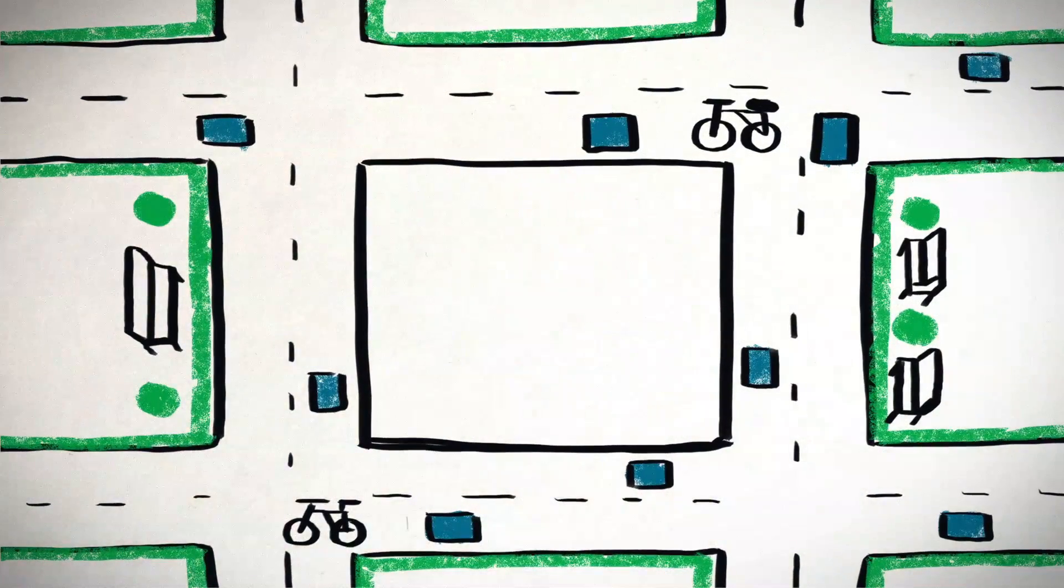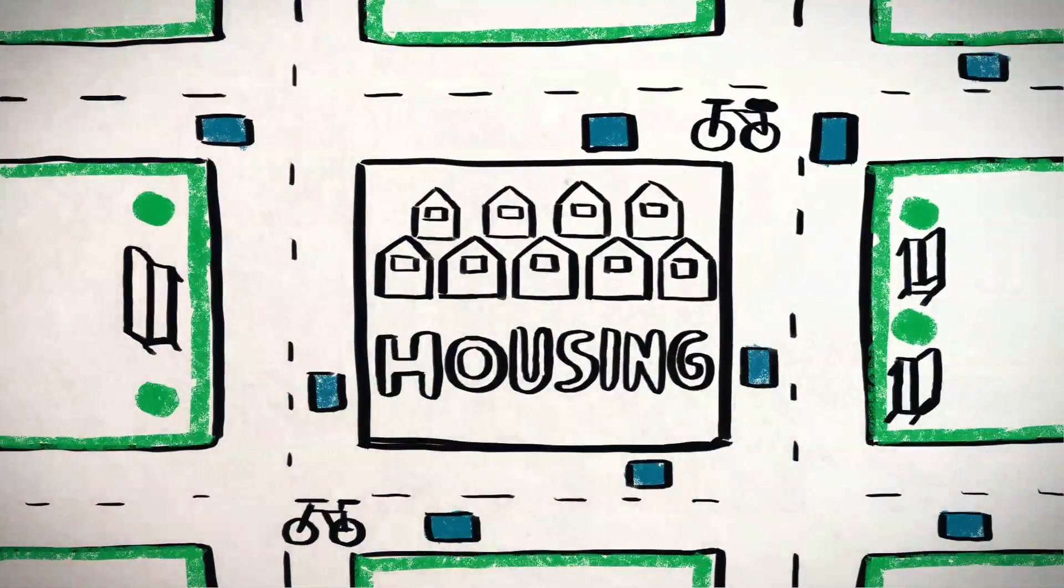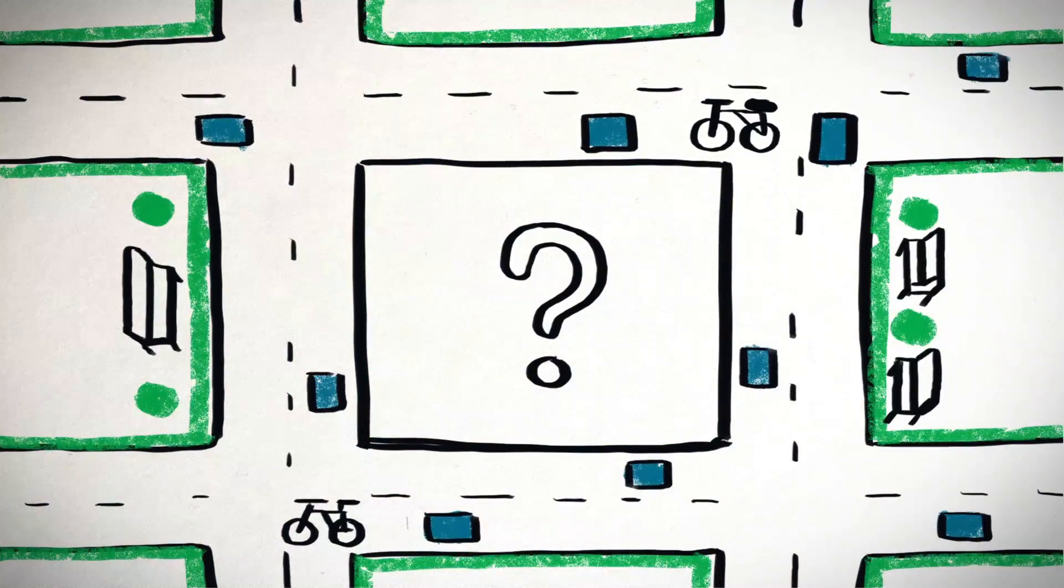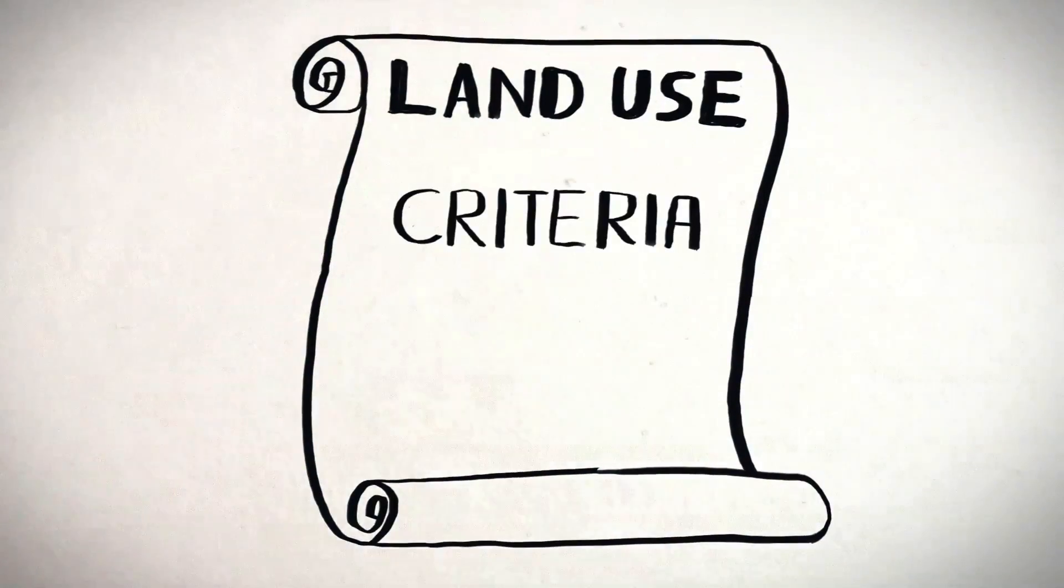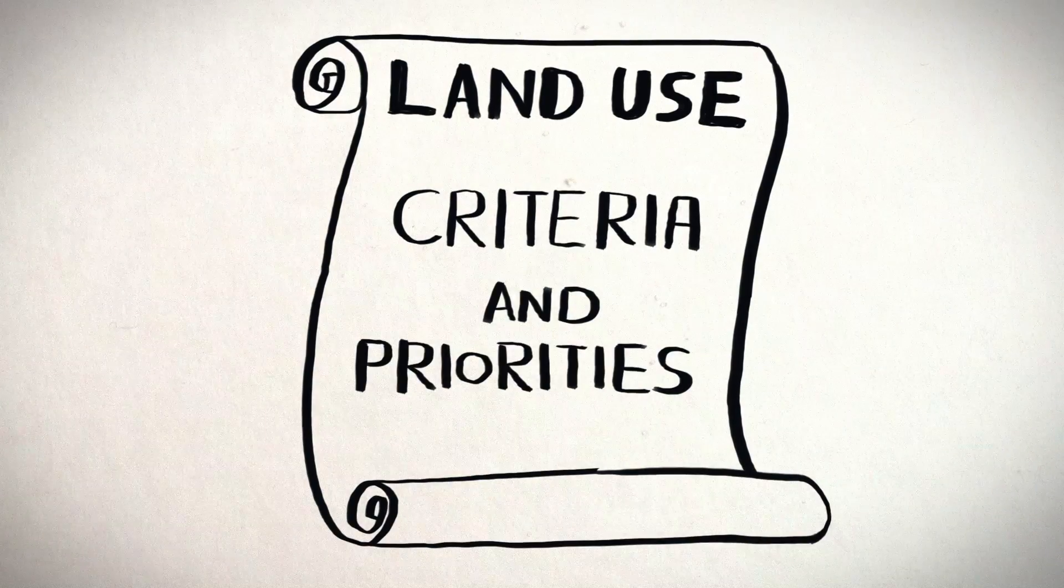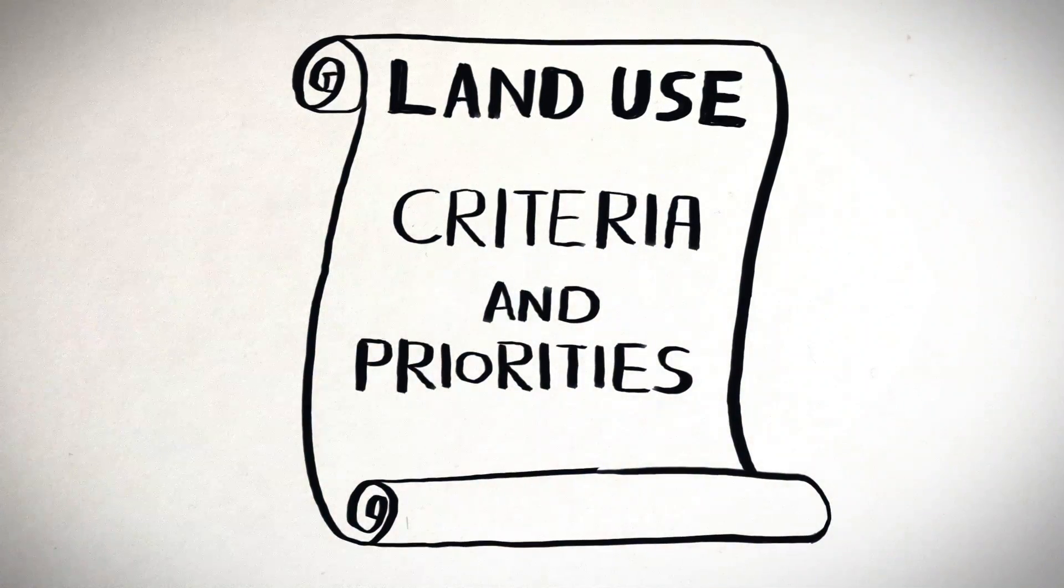We can get rid of parking lots and build affordable housing, or public parks, or whatever. Establishing the criteria and priorities for newly available public land will be critical to making sure communities get what they need.